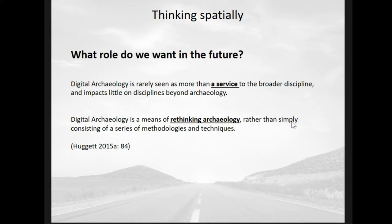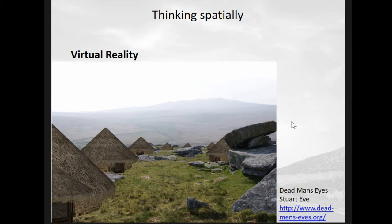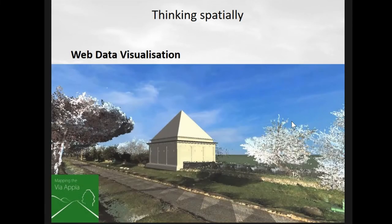There has been some movement forward. This is work by Stuart Eve, who took a landscape settlement reconstruction, put it through augmented reality, and applied the theory of phenomenology — combining a theoretical construct with a virtual reconstruction. Looking at other more data-oriented projects like the 'Mapping the Via Appia' point cloud viewer, the theoretical concepts seem to slide to one side. Theory can occasionally fall out from what we're doing.